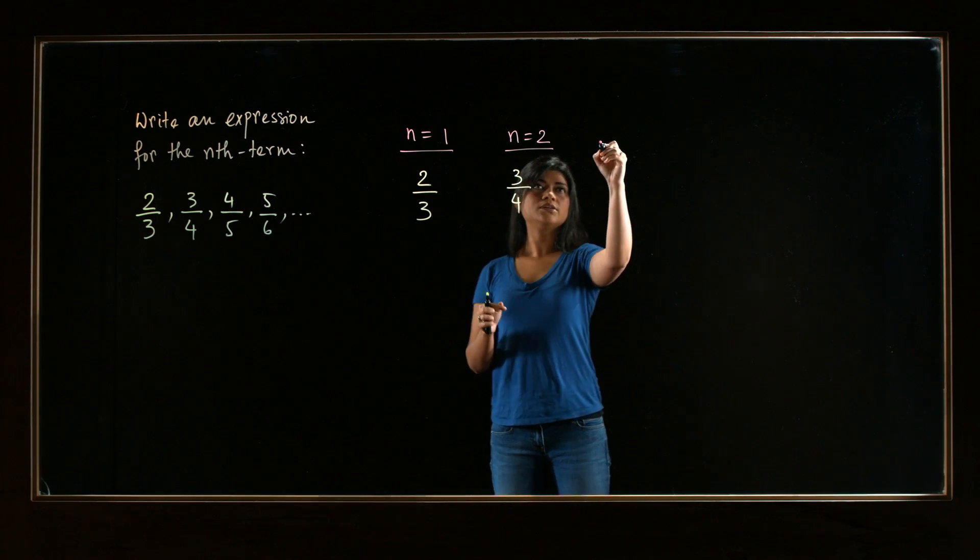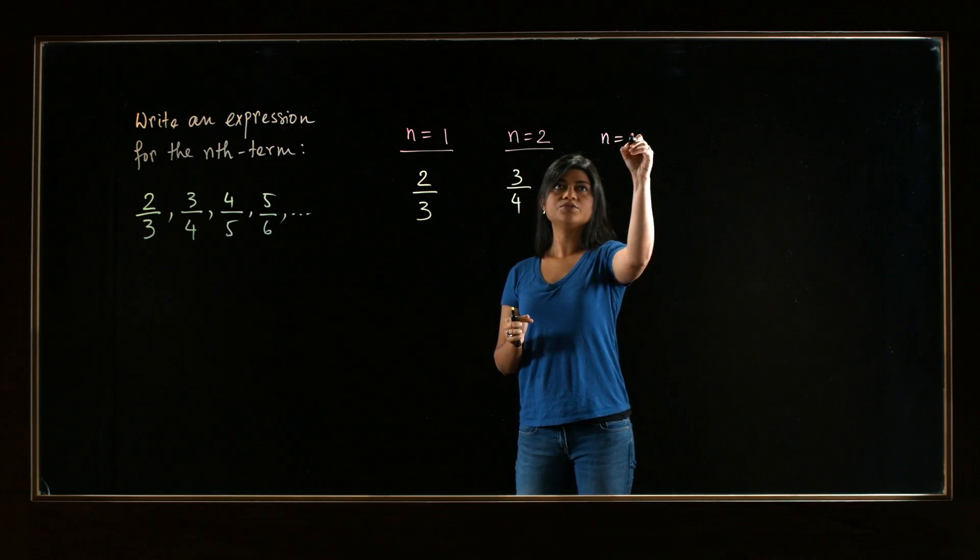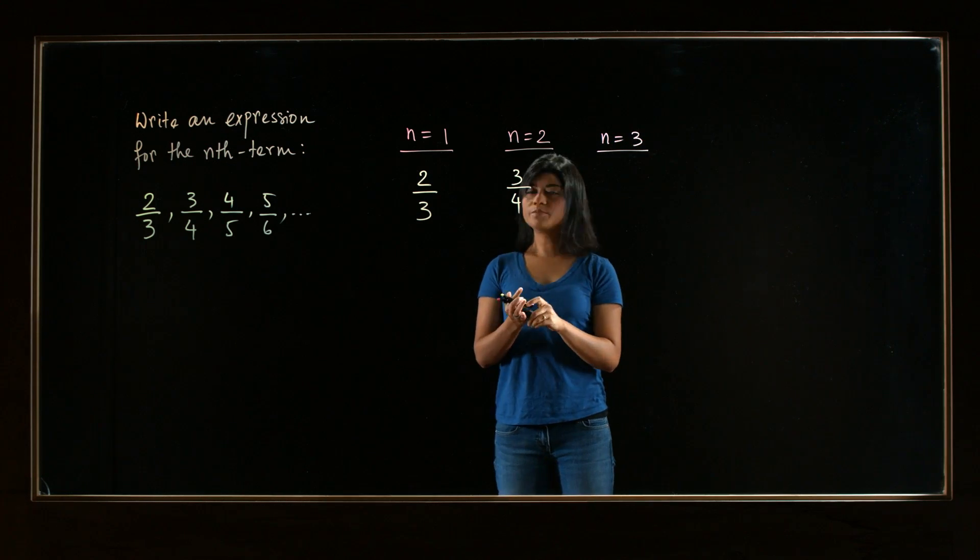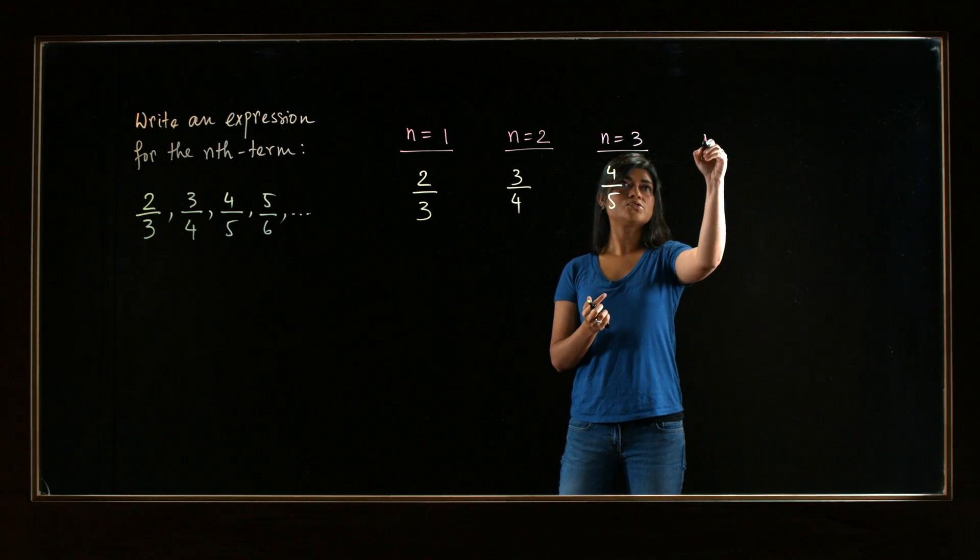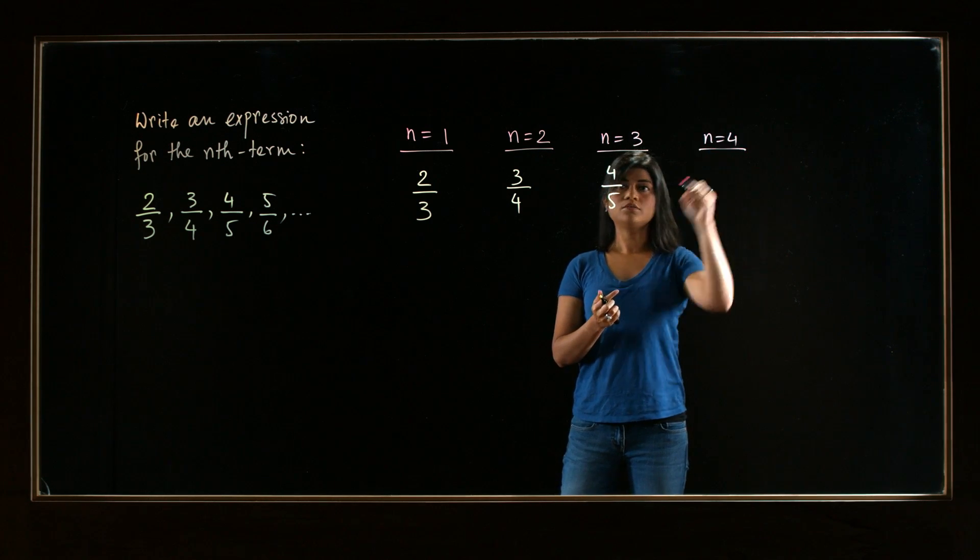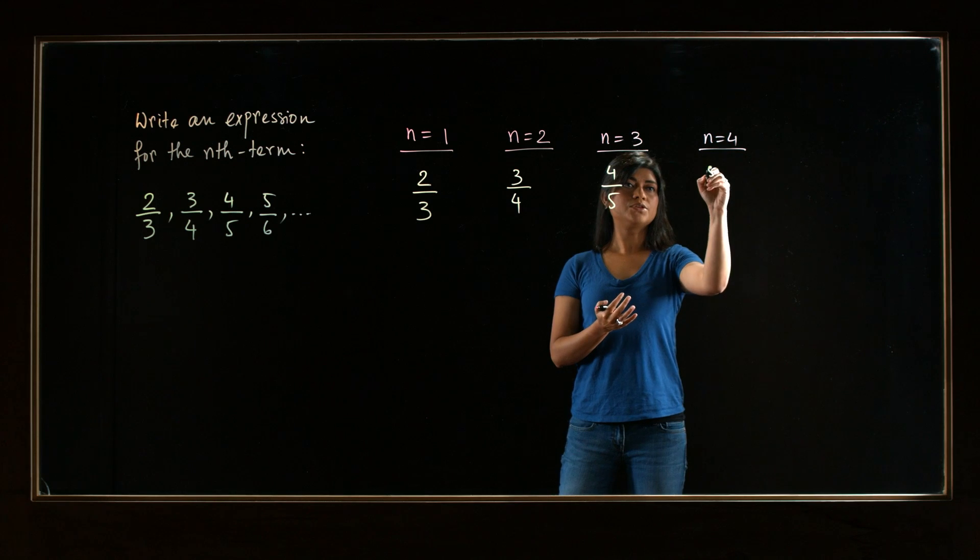Let me put down the other two as well. So n equals 3, the term is 4 over 5. And n equals 4 gives us 5 over 6.